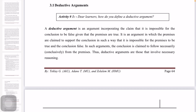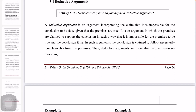Deductive arguments are arguments incorporating the claim that it is impossible for a conclusion to be false when the premises are true. It is an argument in which the premises are claimed to support the conclusion in such a way that it is impossible for the premises to be true and the conclusion to be false.